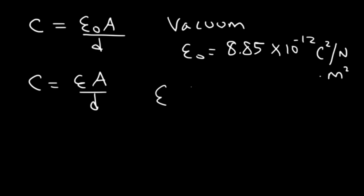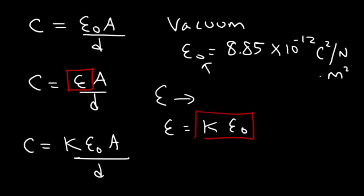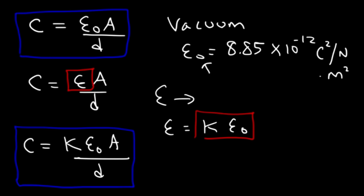The other epsilon without the zero is simply the permittivity of the material between the two parallel plates. Epsilon equals K times epsilon sub-naught. Therefore, C is equal to K times epsilon sub-naught times A over D. This equation gives the capacitance if there's nothing between the two metal plates; if you have a dielectric, the capacitance can be calculated using that equation with K.